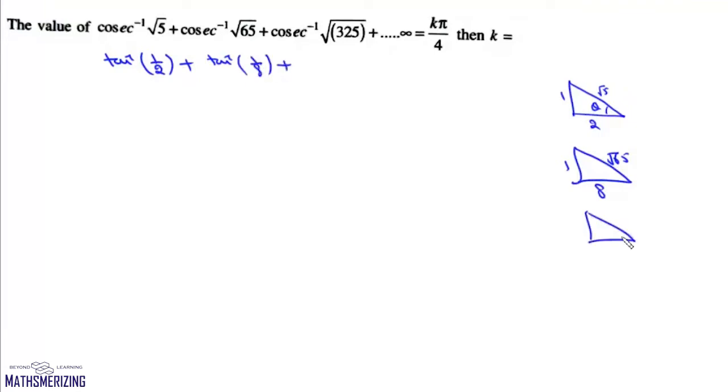Next one it'll be 325, 1, and under root of 324, it'll be tan inverse 1 by 18, and this series continues up to infinite. Now in this form we do not see any pattern, so I'll try and express it as 2 by 4, tan inverse 2 by 16, tan inverse 2 by 36.